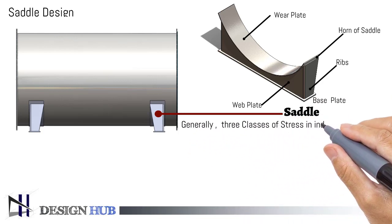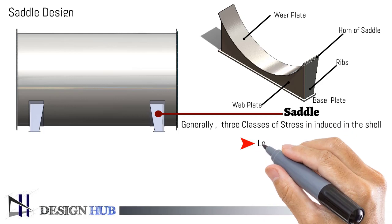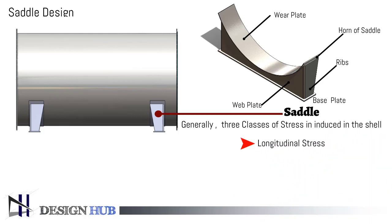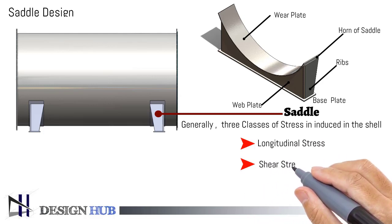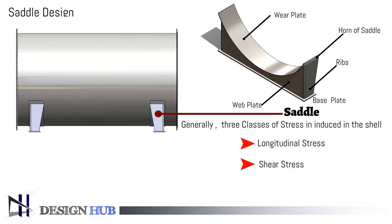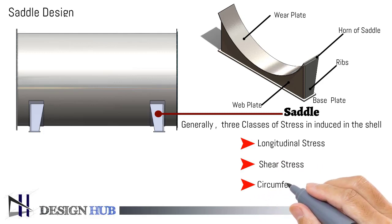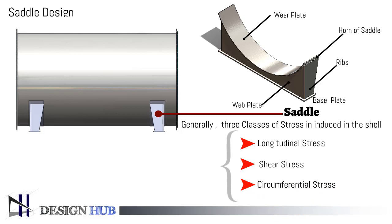Due to weight and internal and external pressure, generally three classes of stress are induced in the shell and saddle: longitudinal stress, shear stress, and circumferential stress. We will discuss each one in detail.